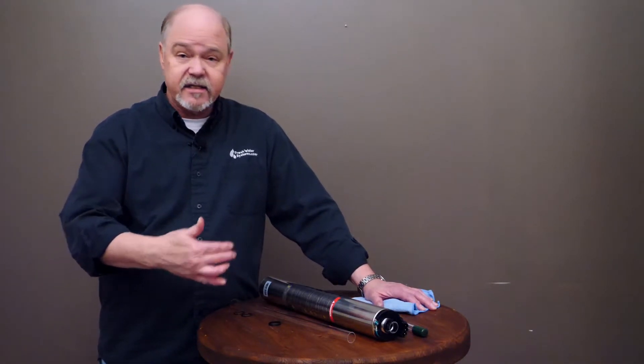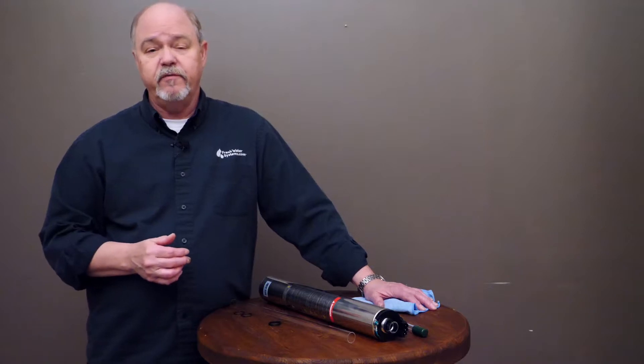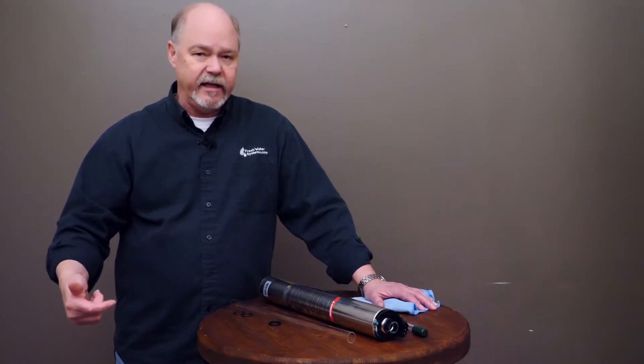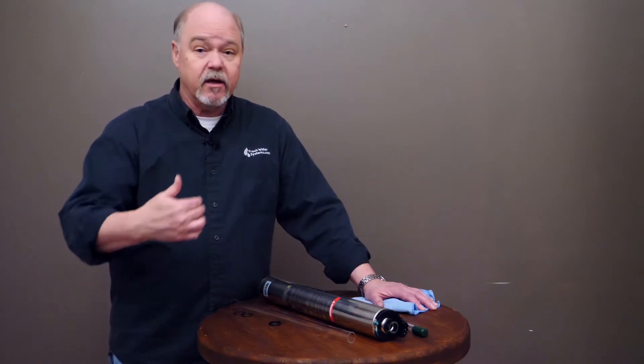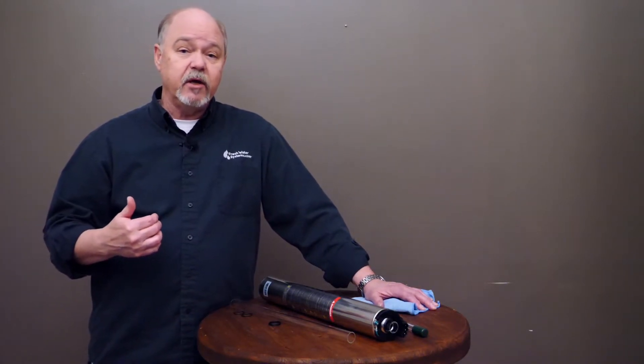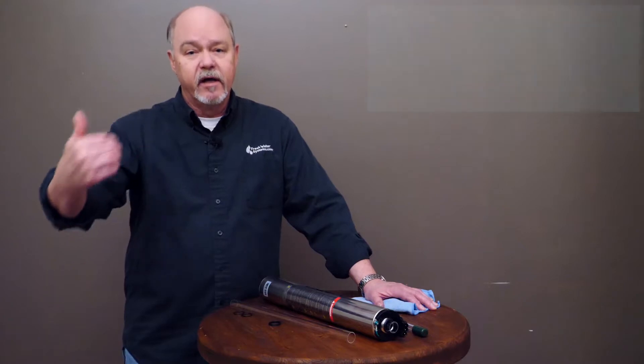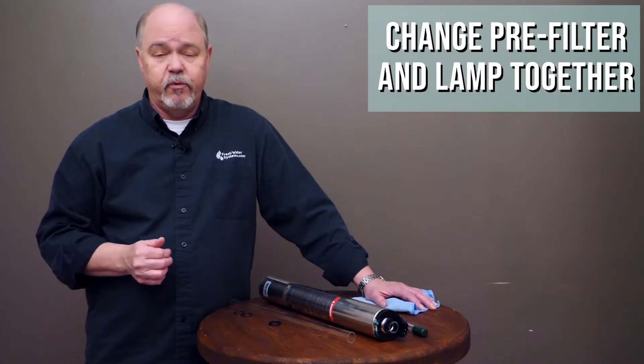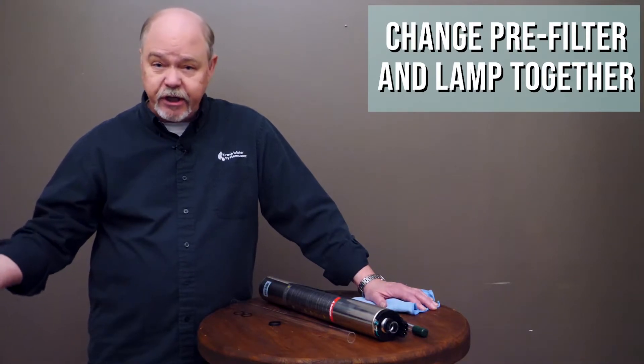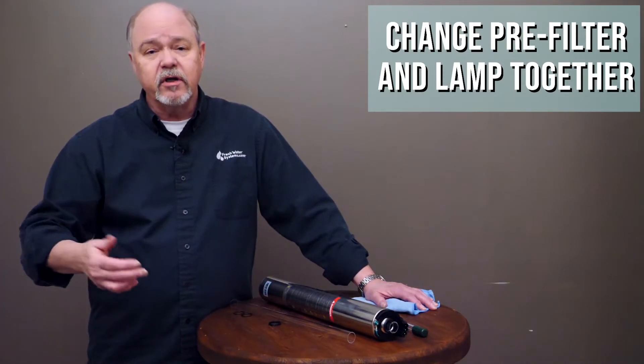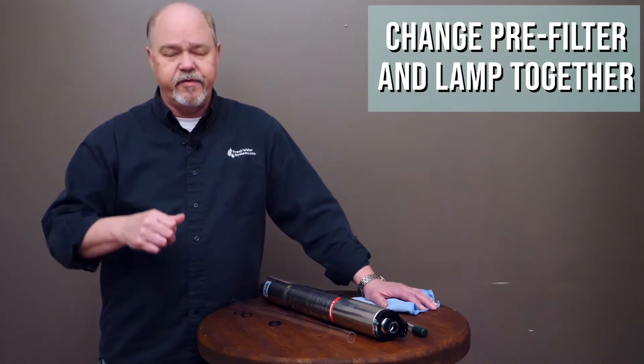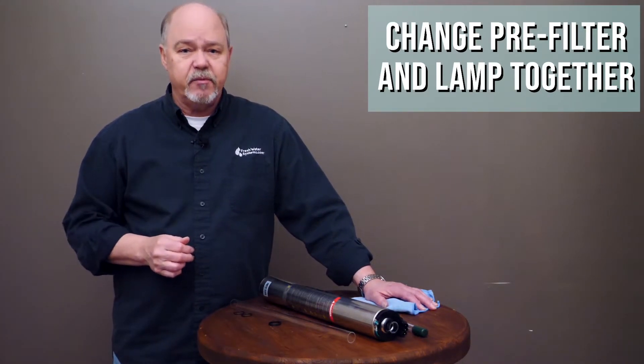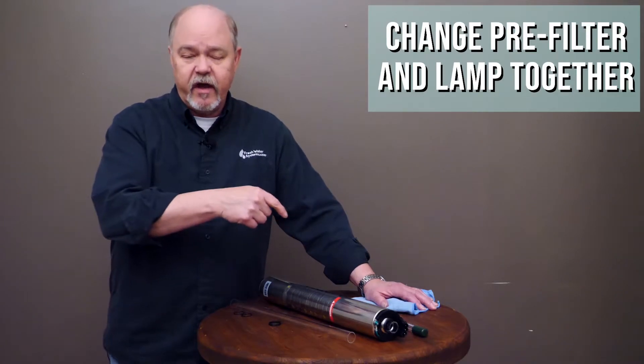In any case that 5 micron pre-filter is incredibly important to keep that clean. So maybe a good maintenance timing would be when you change the lamp, change that pre-filter. If you don't have a lot of dirt and debris in the water supply and you're still getting good flow through it you can leave it longer. But good rule of thumb is, and they're not that expensive, go ahead and change that pre-filter out every time you do the lamp.